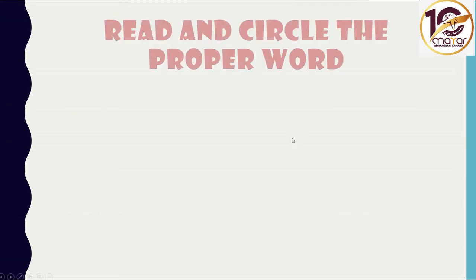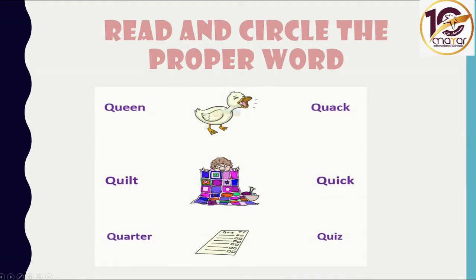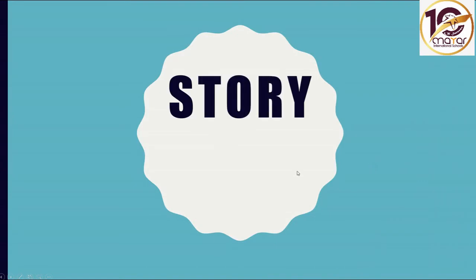Now let's read and circle the proper word with the proper picture. This is a duck and the sound of the duck is quack — excellent. This is a quilt; we cover ourselves with it when we go to sleep — excellent. The questions that the teacher gives you are a quiz — quiz.